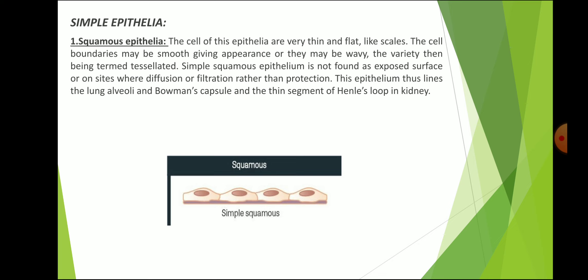Simple squamous epithelium is not found at exposed surfaces or on sites where absorption and secretion are the primary activities. It generally occurs where diffusion or filtration — rather than protection — is the basic need. This epithelium lines the lung alveoli, Bowman's capsule, and the thin segment of Henle's loop in the kidney. In these situations it forms barriers at gas-tissue fluid, blood-tissue fluid, and tissue fluid-lymph interfaces. Both endothelium and mesothelium, which are mesodermal derivatives, belong morphologically to the tessellated squamous variety.